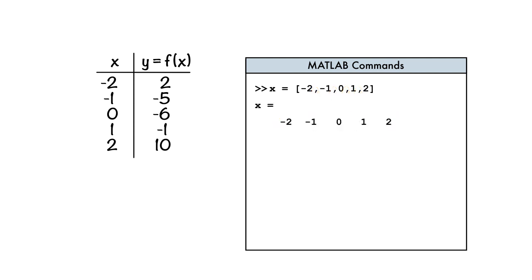But what if an application calls for a column vector instead? No problem. We use semicolons in place of the commas.